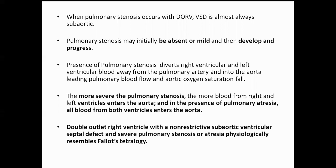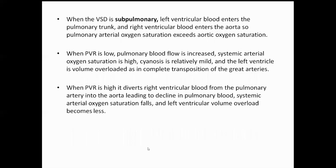DORV with non-restrictive subaortic ventricular septal defect and pulmonary stenosis or atresia physiologically resembles tetralogy of Fallot. When the VSD is subpulmonary, the left ventricular blood enters the pulmonary trunk. When PVR is high, blood flow is diverted from the pulmonary artery into the aorta, leading to a decline in pulmonary blood flow, systemic arterial oxygenation falls, and left ventricular volume overload becomes less.